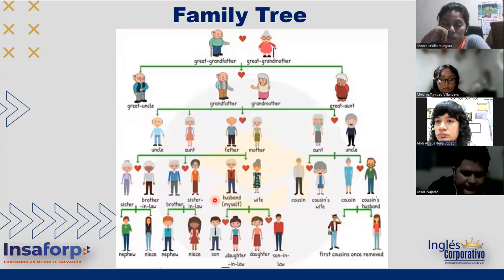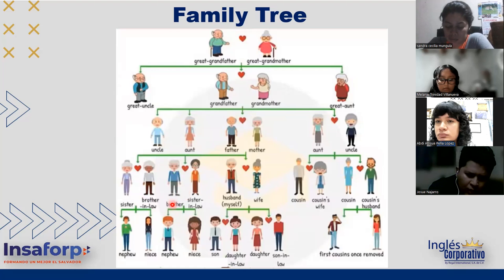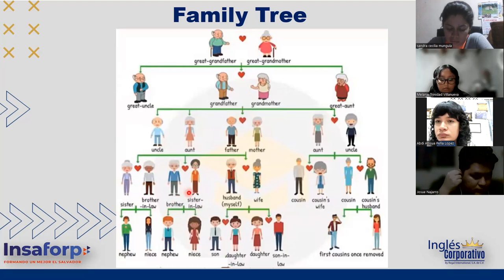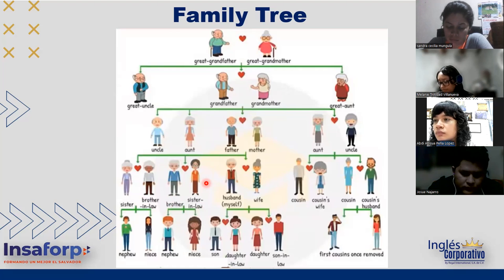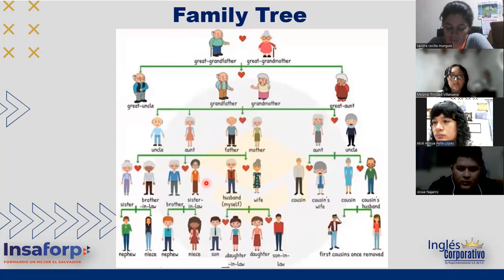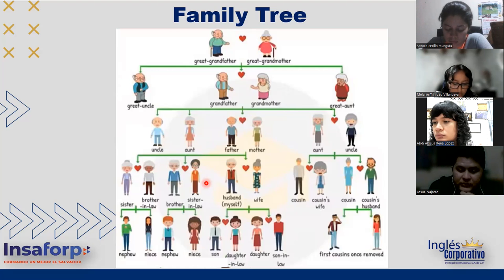Nephews and nieces are the children of your brothers or sisters — 'nephews' for males and 'nieces' for females. From your own descendants, your son's wife is your daughter-in-law and your daughter's husband is your son-in-law. Just as parents-in-law are often called simply 'father and mother,' sons-in-law and daughters-in-law are often called simply 'son and daughter.' The 'in-law' is most commonly retained for brothers/sisters-in-law. For children of your cousins, the technical term is 'cousin once removed' — essentially second-degree cousins — but in practice we usually simplify to just 'cousin' or 'my cousin's daughter/son.'